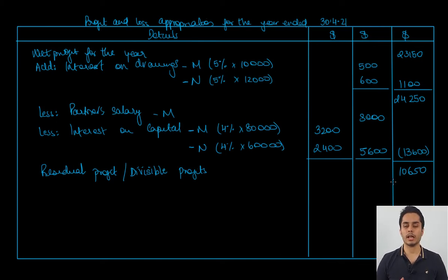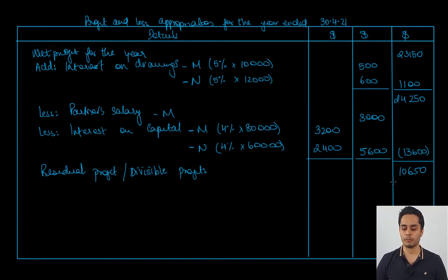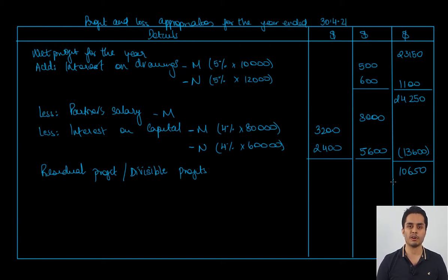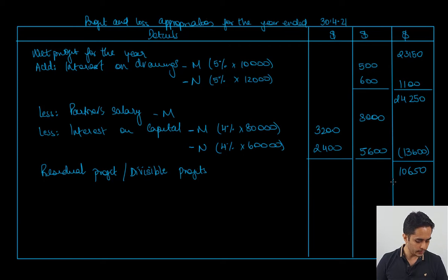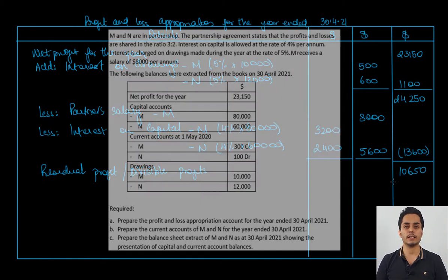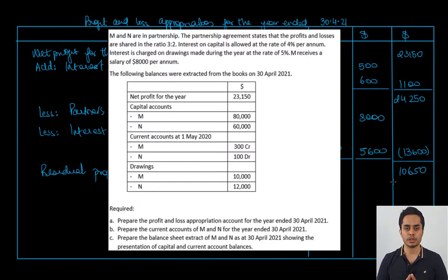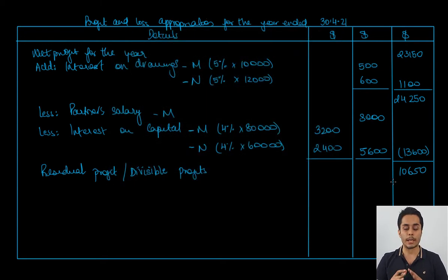After deducting the total of salary and interest on capital from the profit, we get a residual profit of 10,650. This is also known as the divisible profit — the final profit that will be shared between the partners in their agreed profit sharing ratio. The question states the agreed profit sharing ratio was 3 to 2, so we divide 10,650 between M and N in that ratio.